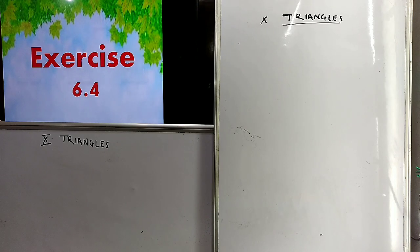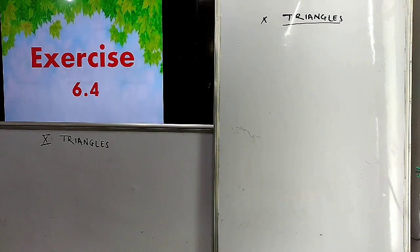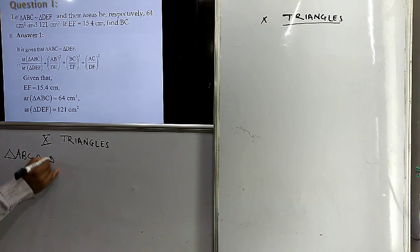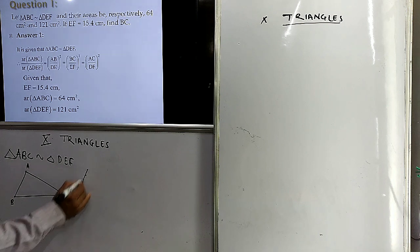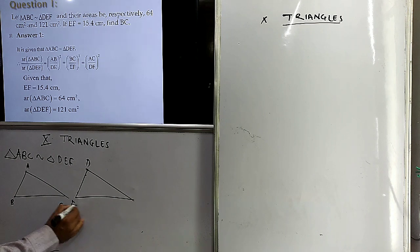Now let us do the first problem of exercise 6.4. What is given in this problem? Area of triangle ABC and triangle DEF are given. These are similar triangles — triangle ABC is similar to triangle DEF. Let us draw triangle ABC, and this triangle is similar to triangle DEF.